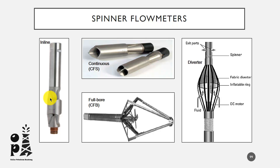The second type is the continuous flow meter, which is located at the bottom of the tool string and it is similar to the inline flow meters. These use turbine and helical spinners. As the spinner diameter can be larger than the tool OD, the sensitivity is improved and the threshold is reduced. The spinner is considerably protected from deformation.